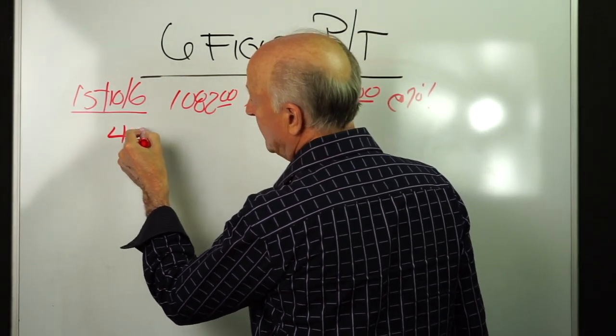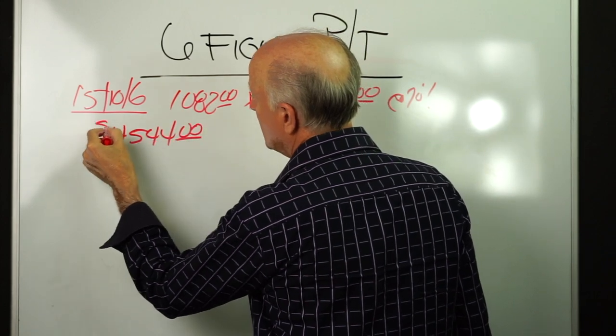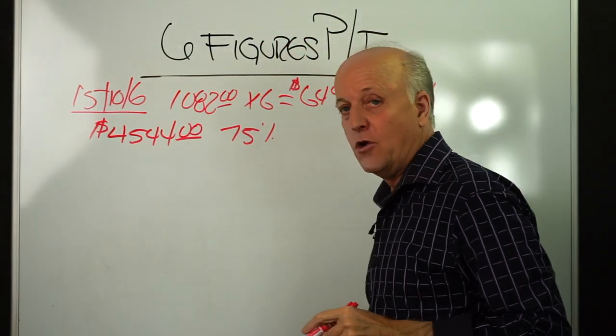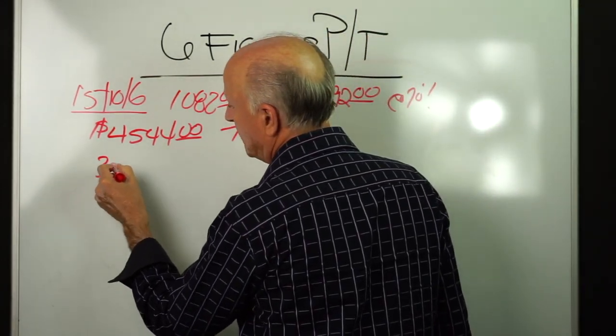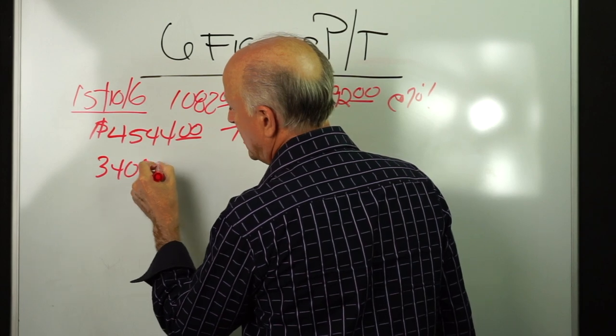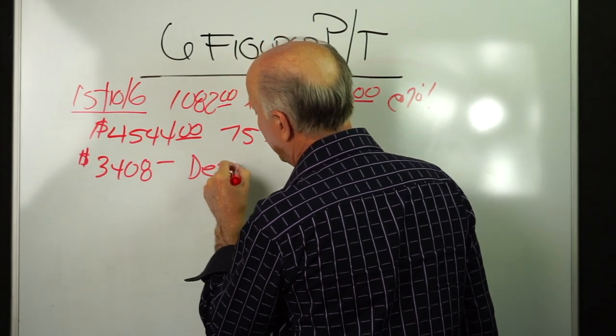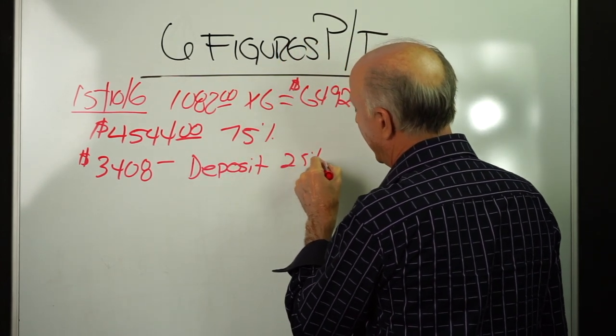That is going to be advanced to us when the policies are issued. So at 70% contract, that gives us a number of $4,544. Now they're going to advance 75% of that to us when the policy is issued, so that gives us a number of $3,408 that's what we get deposited in our bank account.